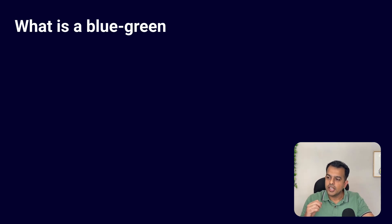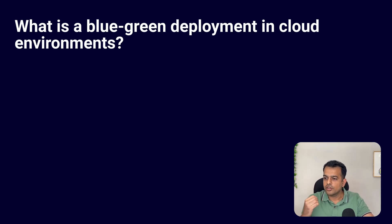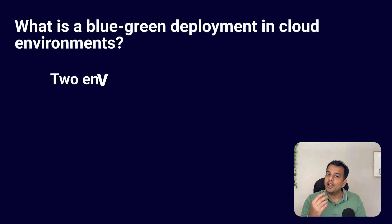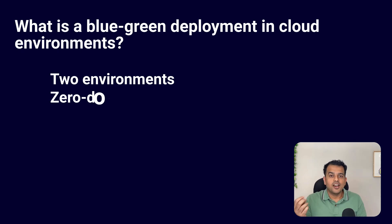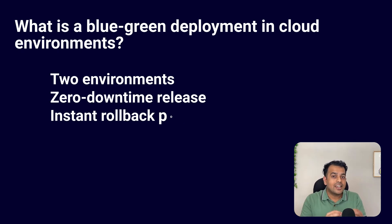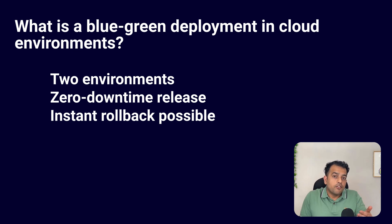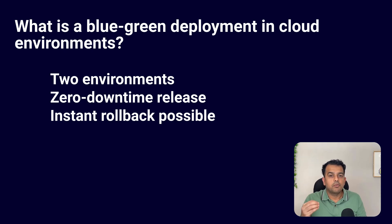Finally, the interview ended with a cloud deployment question: what is blue-green deployment in cloud environments? Blue-green deployment uses two environments — blue and green. Blue runs the current version, green runs the newer version. We switch traffic to green only after it is fully tested. If anything fails, we roll back instantly to blue. It provides zero-downtime deployment.